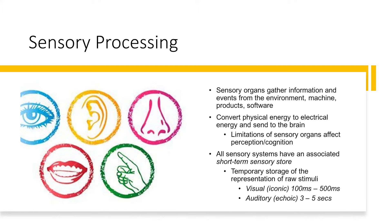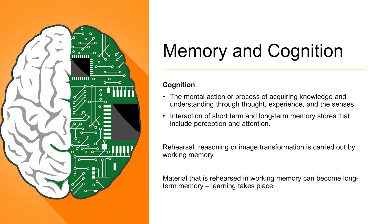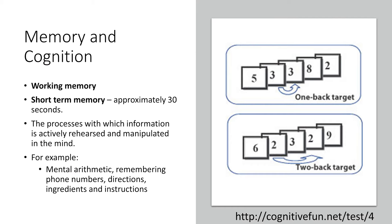Our short-term sensory memory combined with working memory and long-term memory are involved with cognition. Cognition is the mental action or process of acquiring knowledge and understanding through thought, experience, and sensation. It involves the interaction of short-term and long-term memory stores that include perception and attention. Material that is rehearsed in working memory can become long-term memory, which indicates that learning has taken place. Working memory is a form of short-term memory that lasts approximately 30 seconds — it is the process of actively rehearsing and manipulating information in the mind. This type of memory is useful for mental math, remembering phone numbers, directions, and simple instructions.